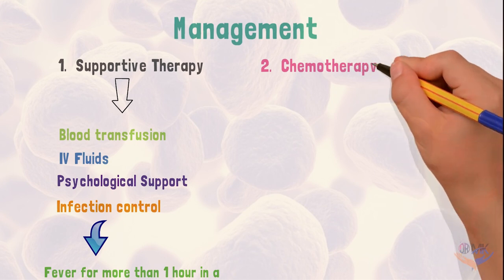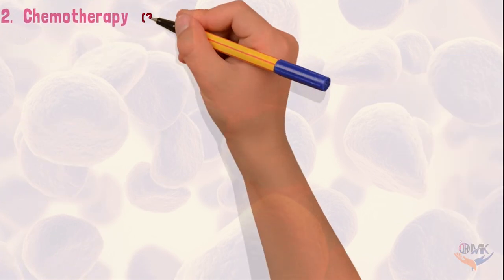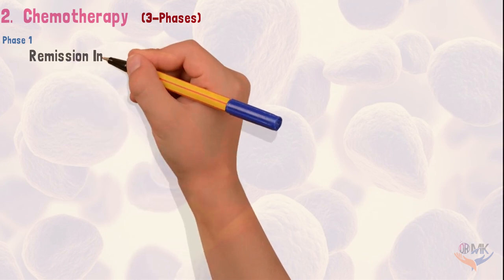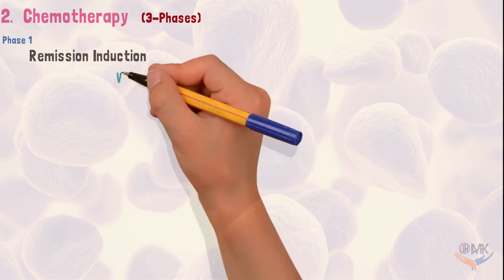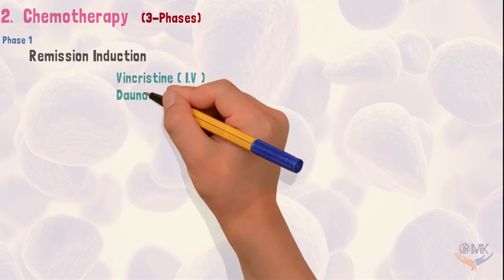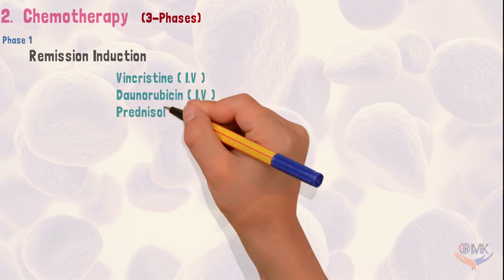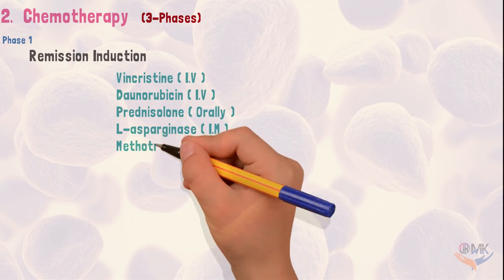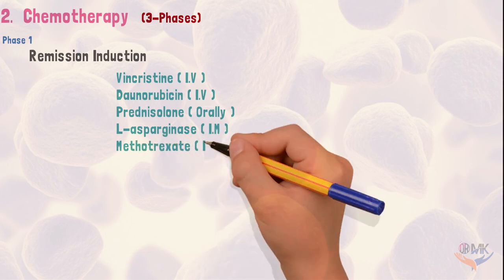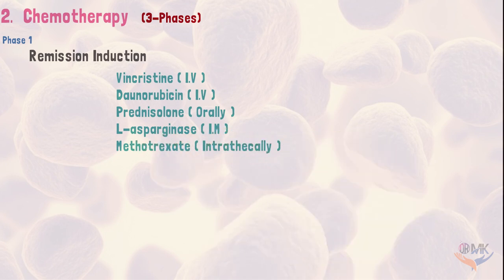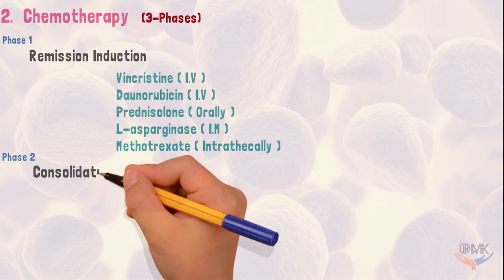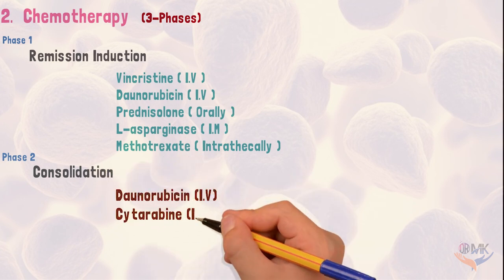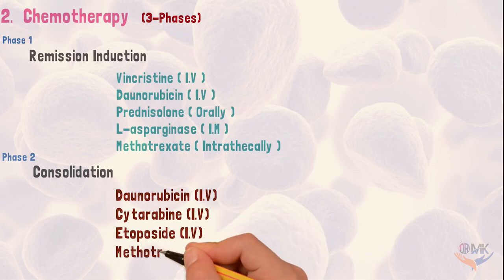Chemotherapy for acute lymphoblastic leukemia is done in three phases. Phase one is the remission induction phase, where drugs such as vincristine, daunorubicin, prednisolone, L-asparaginase, and methotrexate are given. The second phase is the consolidation phase, in which daunorubicin, cytarabine, etoposide, and methotrexate are given.